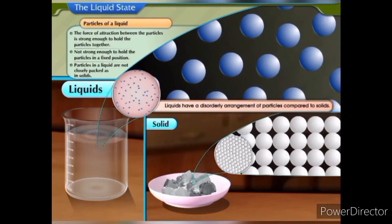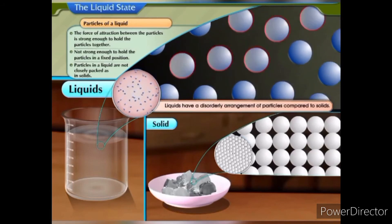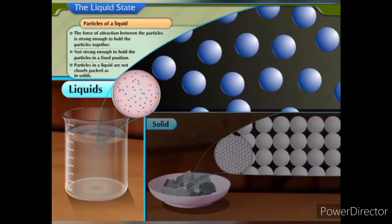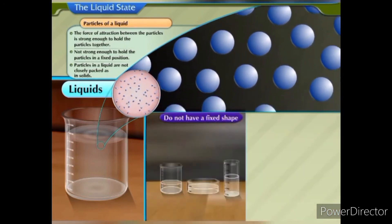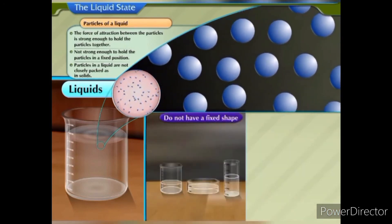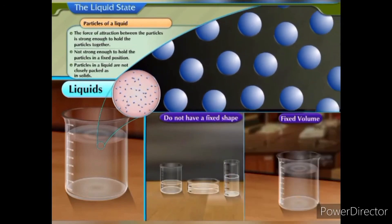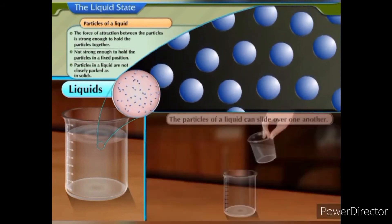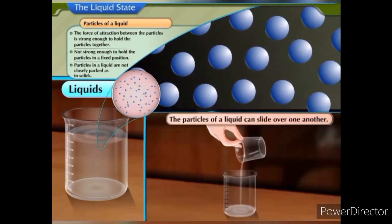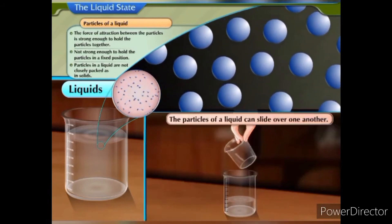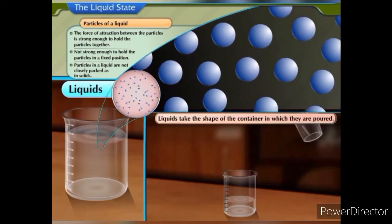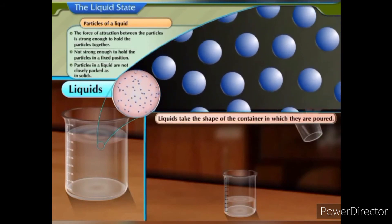Thus, liquids have a disorderly arrangement of particles compared to solids. Due to these reasons, liquids do not have a fixed shape, but have a fixed volume. They cannot be compressed much. The particles of a liquid can slide over one another. Therefore, liquids take the shape of the container in which they are poured.